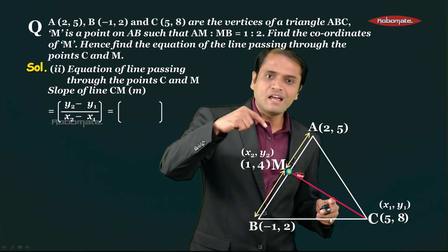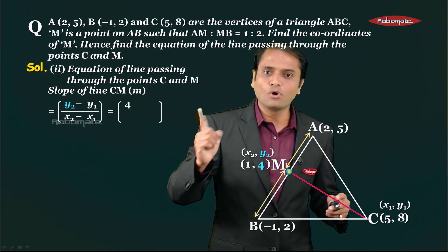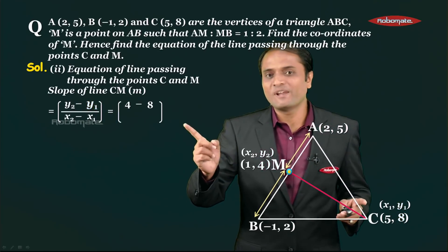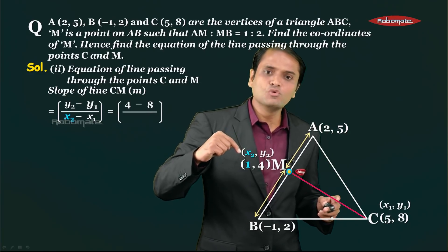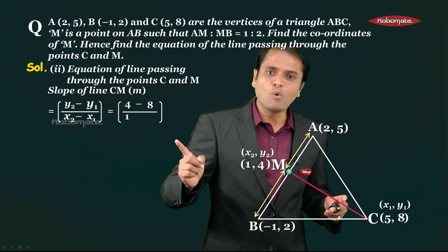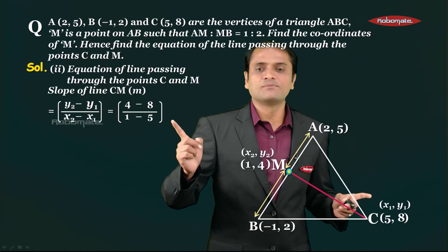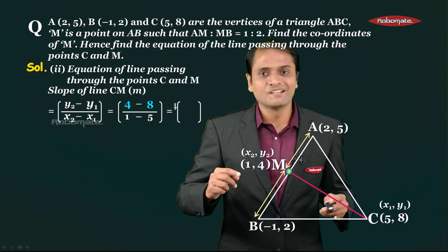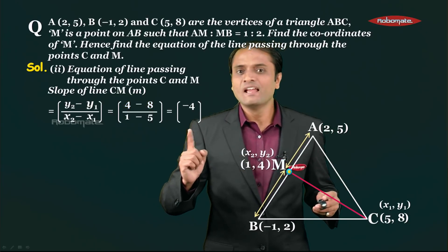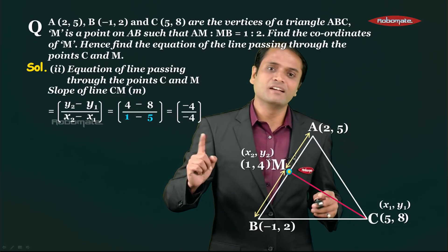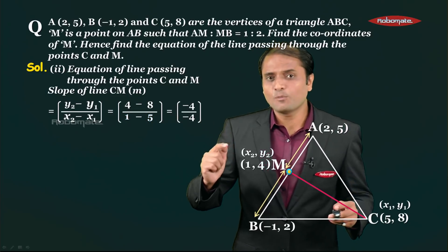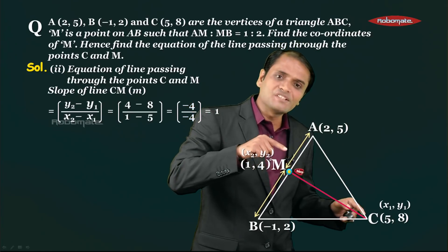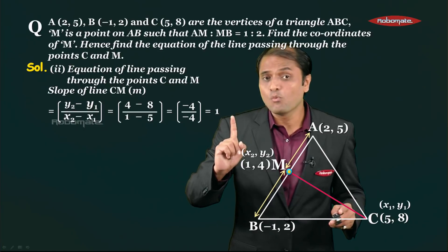Substituting the values: y2 is 4 and y1 is 8, so the numerator is 4 - 8; x2 is 1 and x1 is 5, so the denominator is 1 - 5. This gives -4 / -4, which equals 1. So the slope of line CM is 1.